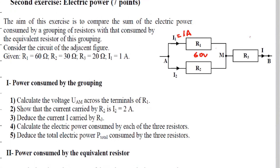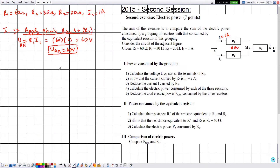Notice that in this case R1 and R2 are in parallel. According to the law of uniqueness of voltages, they have the same voltage. The applied voltage across R1 is 60 volts, which equals the applied voltage across R2, also 60 volts. Now in number two, they are telling me to show that the current carried by R2 is I2 equal to 2 amperes.